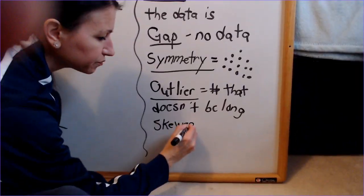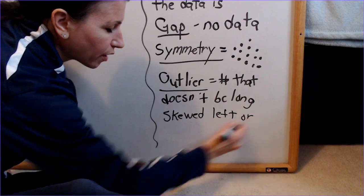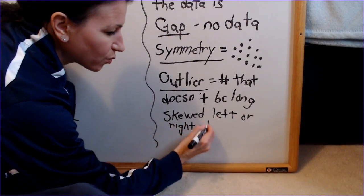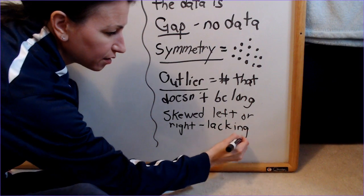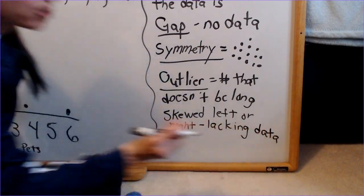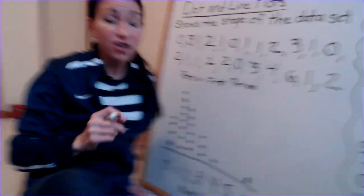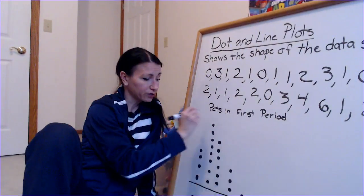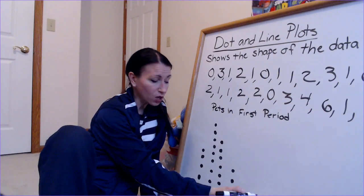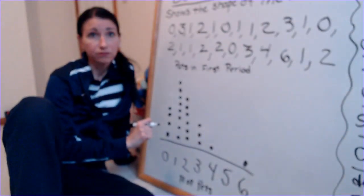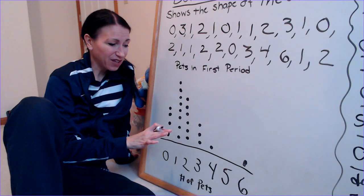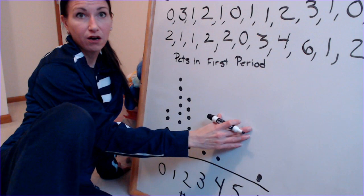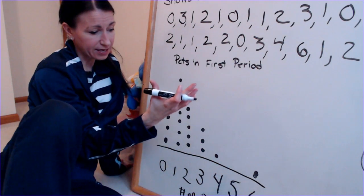So skewed — left or right — is where it's lacking data. To summarize our first graph: we have a peak, we have a cluster, we have a gap, we do not have symmetry, we do not have an outlier, and it is skewed on the right.